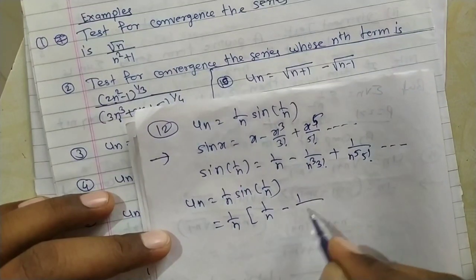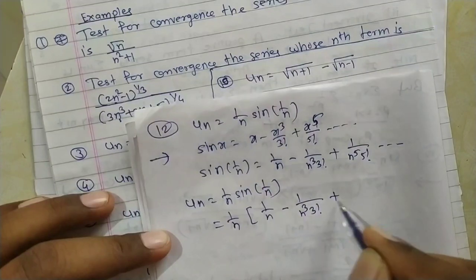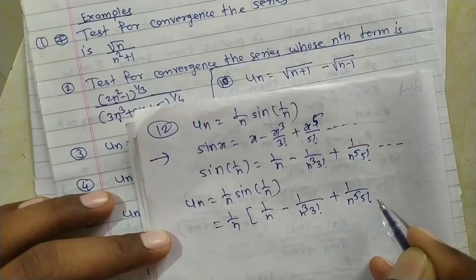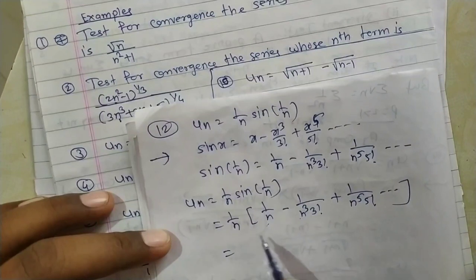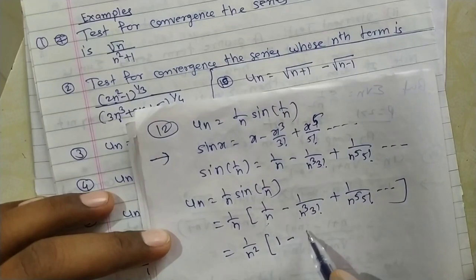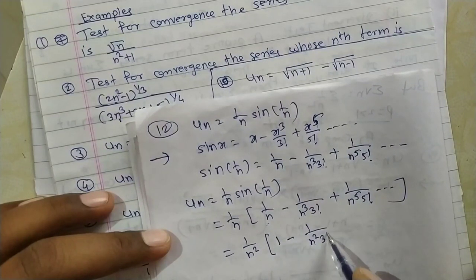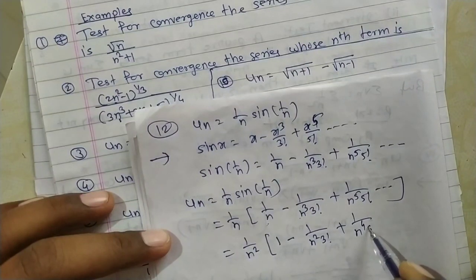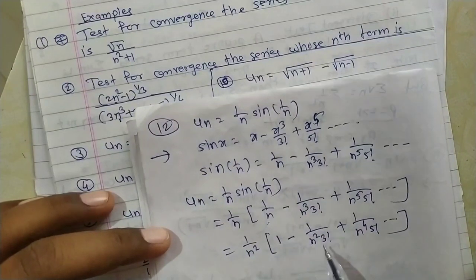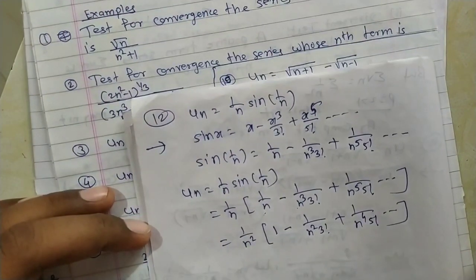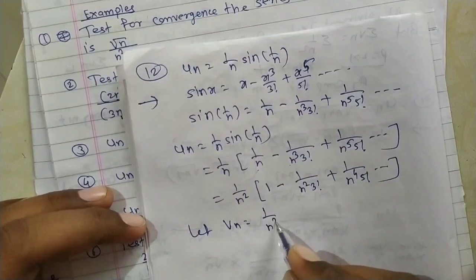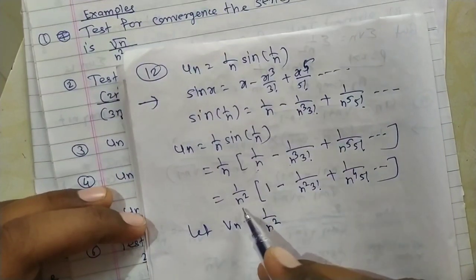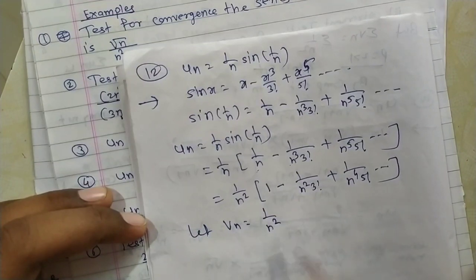Therefore un = (1/n)·sin(1/n) = (1/n)·[1/n − 1/(n³·3!) + 1/(n⁵·5!) − ...] = 1/n² − 1/(n⁴·3!) + 1/(n⁶·5!) − ... Taking 1/n² common: un = (1/n²)·[1 − 1/(n²·3!) + 1/(n⁴·5!) − ...]. So vn = 1/n².